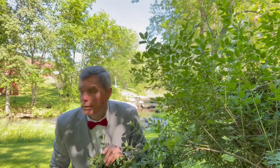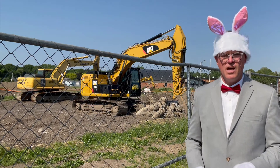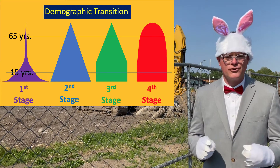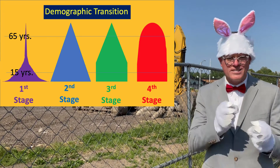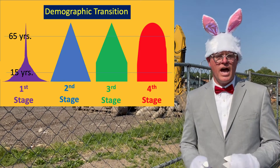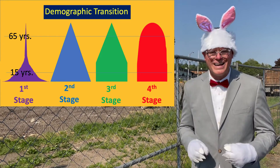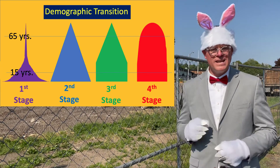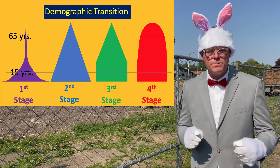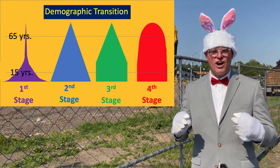Population growth has not been uniform across populations. There have been four stages of population distribution. The wealthy countries, first to industrialize, have already progressed through all four stages, and countries at various stages of industrializing have followed the same pattern. In the first stage, people have many children but due to poor diet, poor sanitation, and poor medical care, many of the children die. Population distribution tends to have many young people and few older people with a high mortality rate.